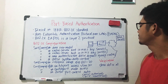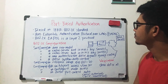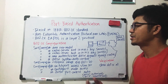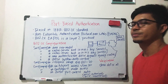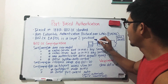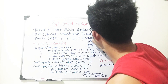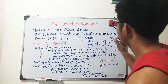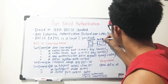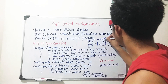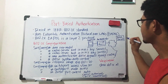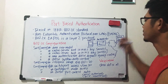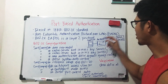There are some terms we need to be familiar with in this diagram. We have what we call the supplicant — this is the computer. We call the computer the supplicant and the switch the authenticator.